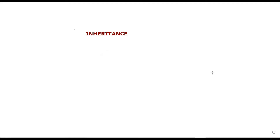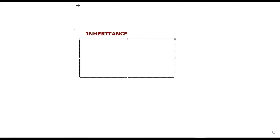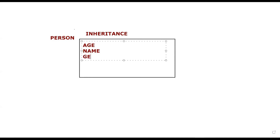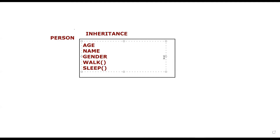As the name suggests, inheritance means one class is inheriting features from another class. Let's say I have one class called Person. In this class, I have some variables — age, name, gender — and some methods like walk and sleep.